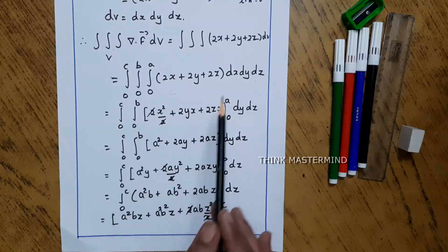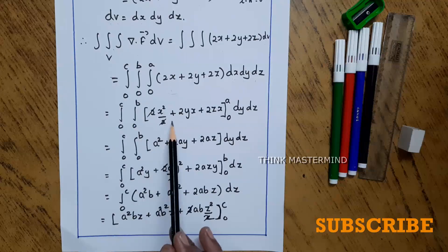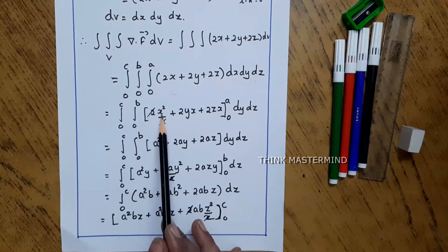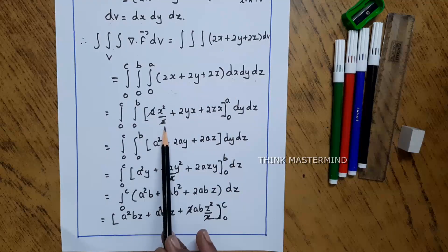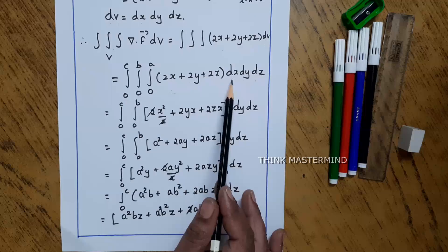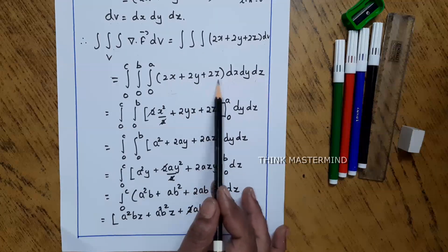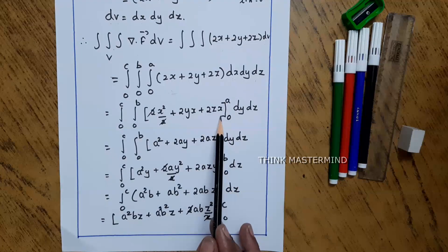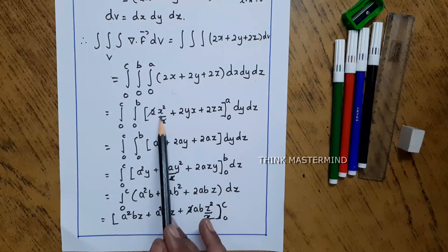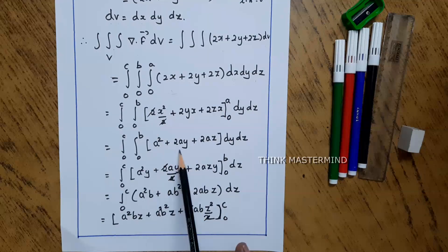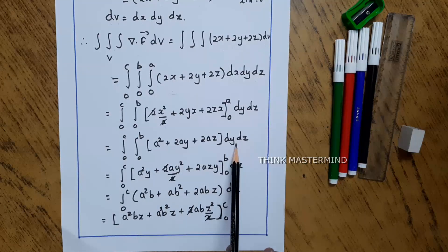Integrating with respect to x, with x limit 0 to a: the integration of 2x gives 2·(x²/2) = x², the integration of 2y with respect to x gives 2yx, and the integration of 2z with respect to x gives 2zx. Substituting the limit 0 to a, we obtain (a² + 2ay + 2az) dy dz.